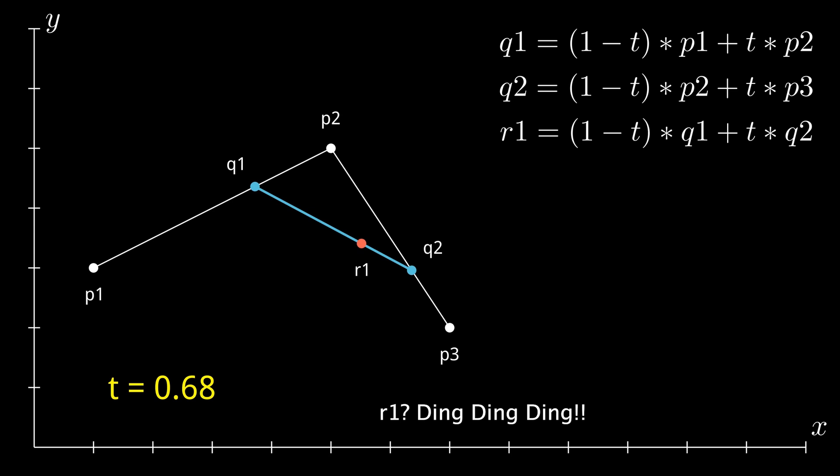R1, ding ding ding, you guessed it right, it moves the exact same way between Q1 and Q2. Now, let's take a look once again at the path R1 takes between P1 and P2.